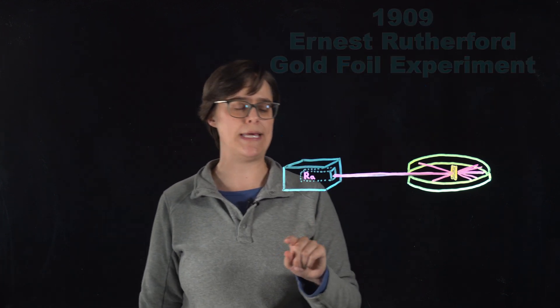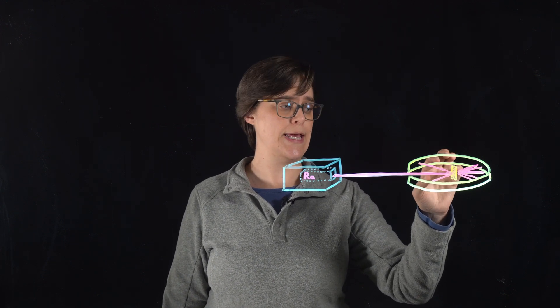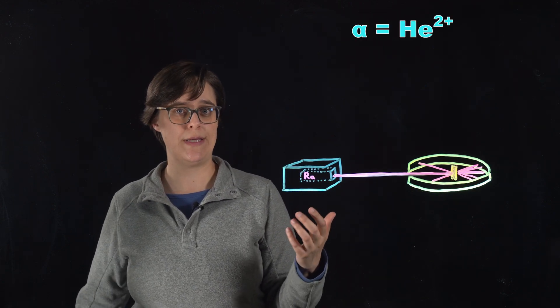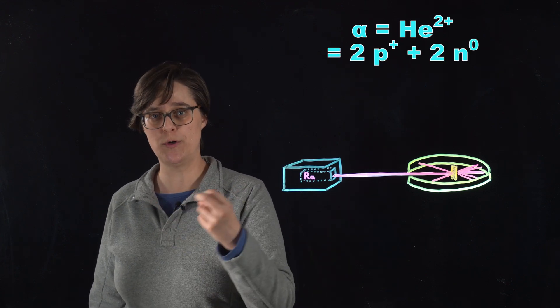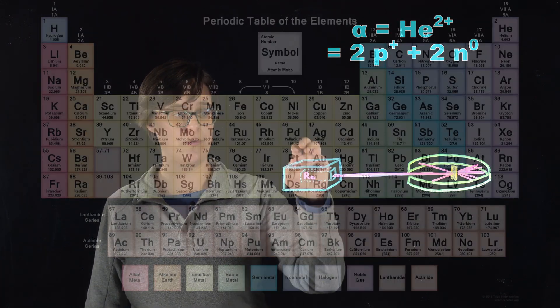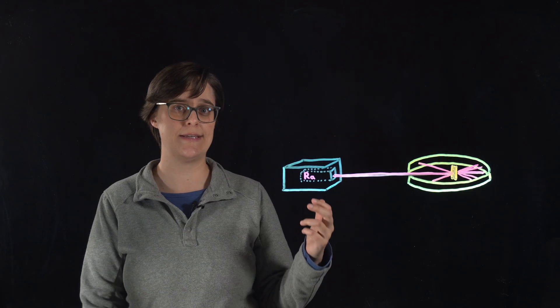They directed a beam of alpha particles at a thin sheet of gold foil and observed how the particles scattered. Alpha particles are helium nuclei with a 2-plus charge. They each consist of two protons and two neutrons. His source for alpha particles was radium, a radioactive element, and when it decays, it naturally emits alpha particles.